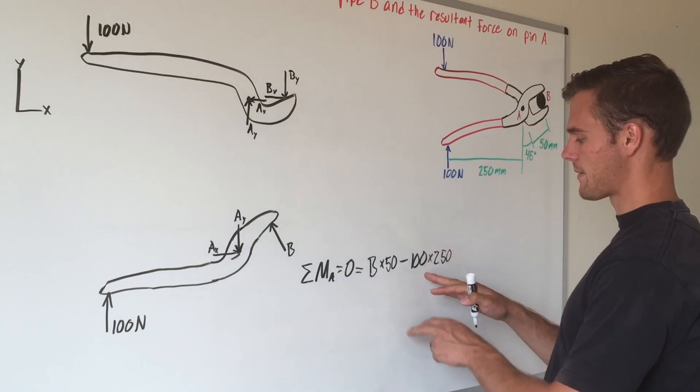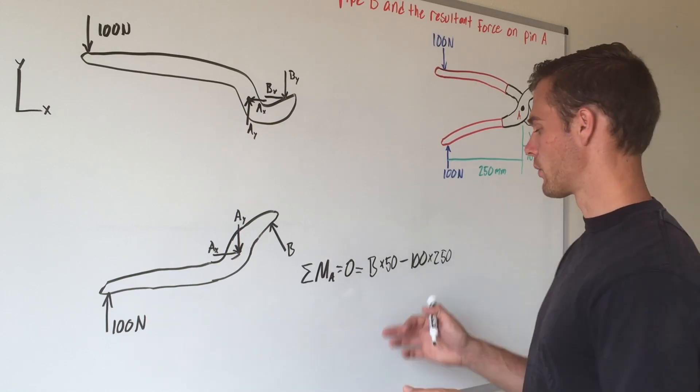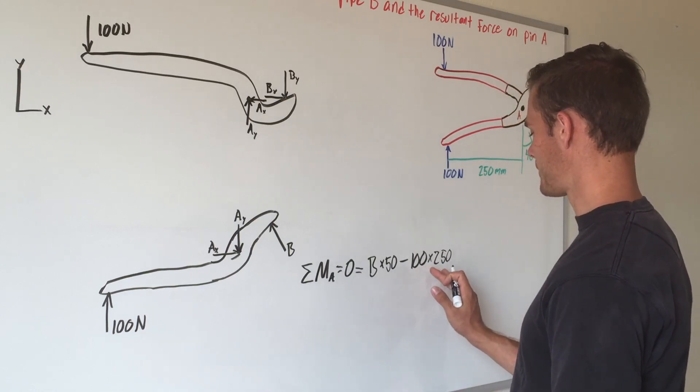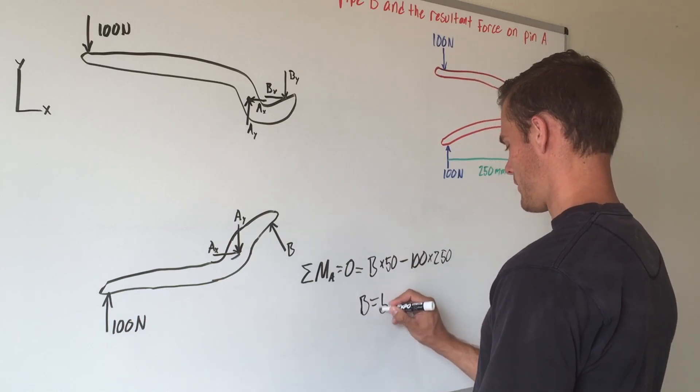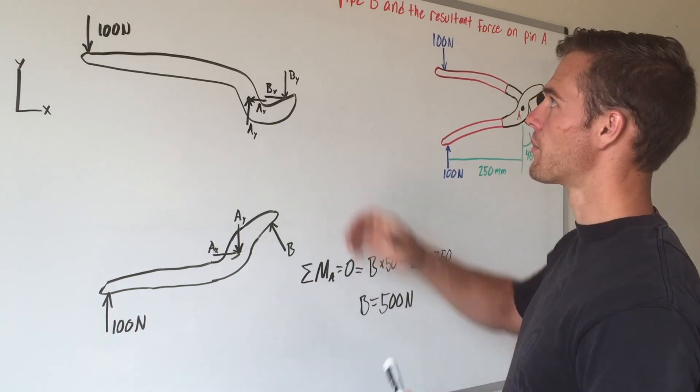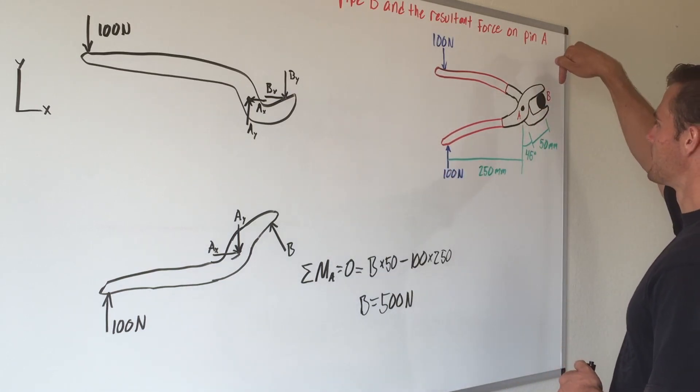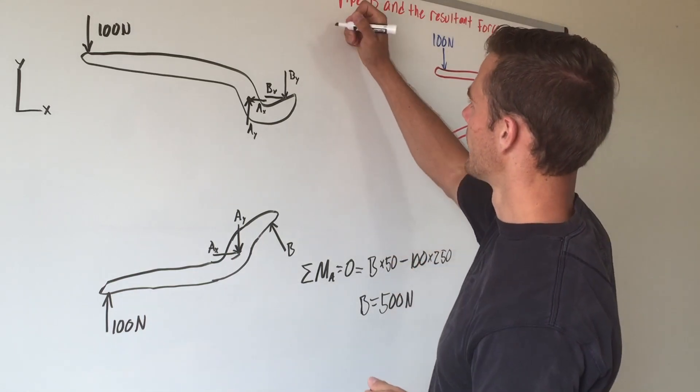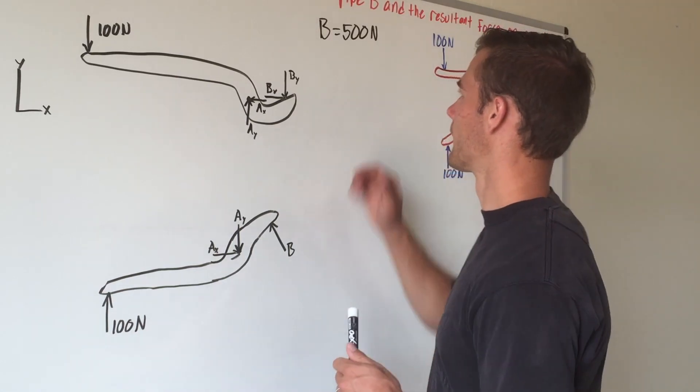This would end up coming out in newton millimeters, but since we're just solving for force B, it doesn't really matter what our units of length are. So if we multiply these together, add it over to the other side and divide by 50, you end up getting that B equals 500 newtons. And so that is part of our answer. We need to find what the reaction force or the force on pipe B is, and we found that it is 500 newtons of force. And so we will need that later on, so we'll label it up here.